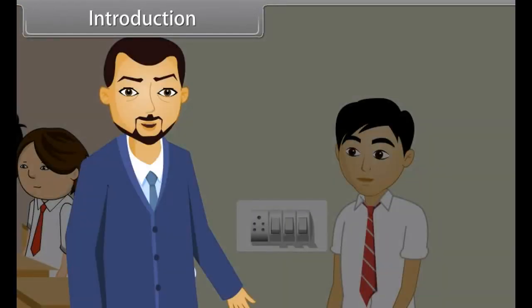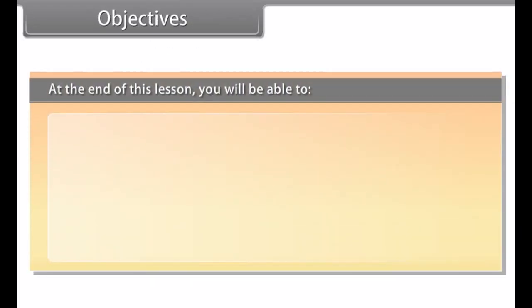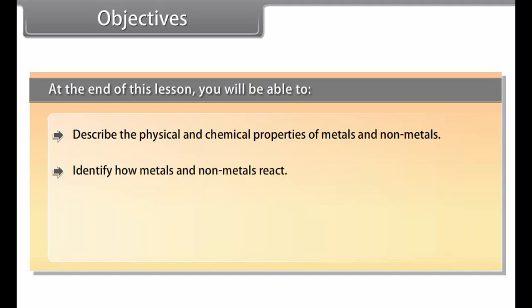Children, in this lesson we will learn about metals and non-metals, the chemical and physical properties of metals, the extracting of metals and the corrosion of metals. Objectives: At the end of this lesson you will be able to describe the physical and chemical properties of metals and non-metals, identify how metals and non-metals react, explain the occurrence of metals, and describe corrosion.